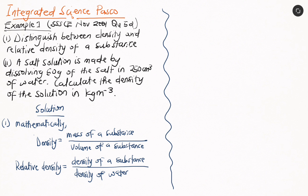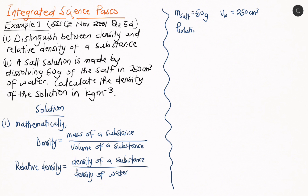Now let's look at part II. We're told that a salt solution is made by dissolving 50 grams of salt — so the mass of salt equals 50 grams — in 250 cm³ of water, so the volume of water V_W is 250 cm³. We are to calculate the density of the solution, so the density rho of the solution is unknown.